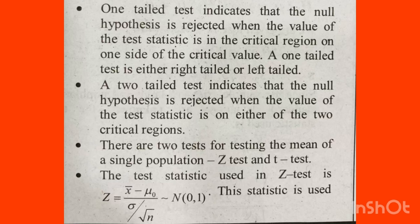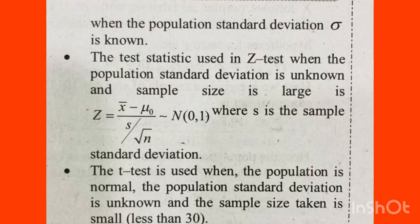The test statistic used in the z-test is: z = (x̄ - μ₀) / (σ / √n). We use this statistic when the population standard deviation is known. If the population standard deviation is known, we can use this equation for the z-test.